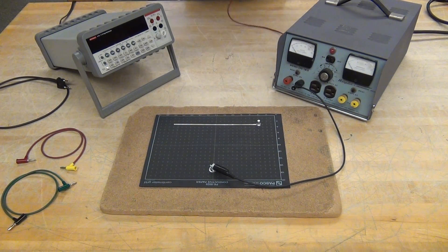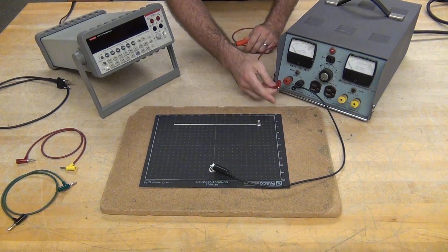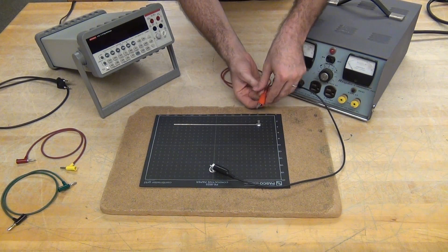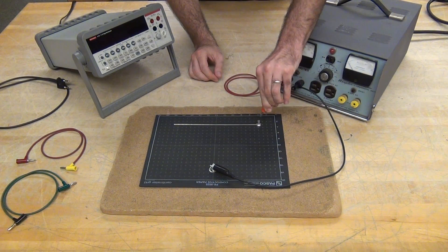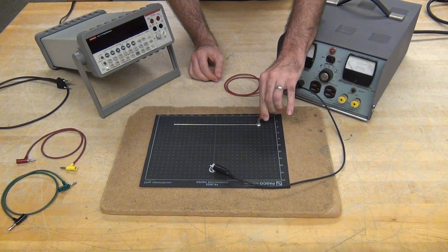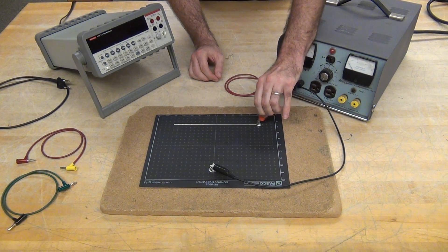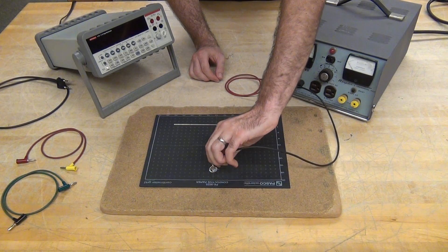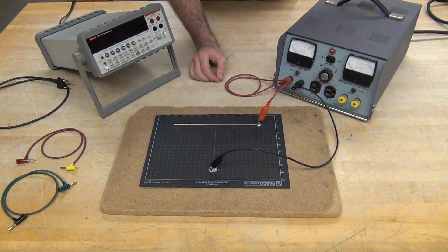I'll use the other banana plug to alligator clip to connect to my other electrode. I've taken care to try and keep the wires as much off the paper as possible because they can influence the field and potential.